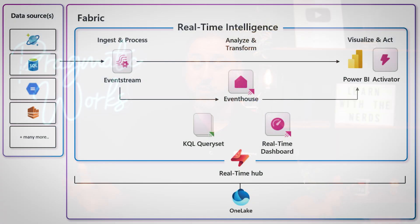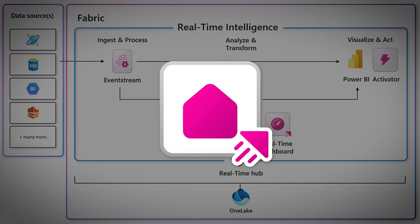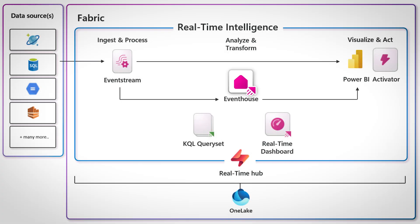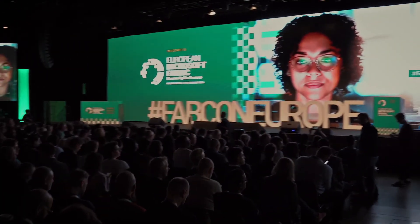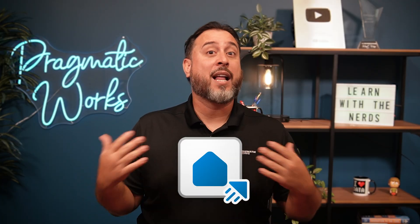We're going to take a very narrow, focused look at what's called an event house, which falls under the Fabric workload of real-time intelligence. It's received quite a few updates and became officially GA at the large event in Sweden back in September. It's here, it's available, though some elements are still in preview.